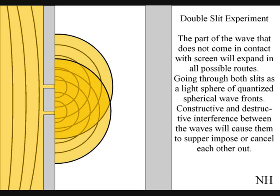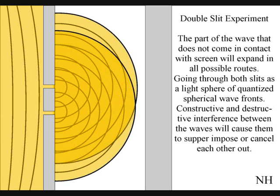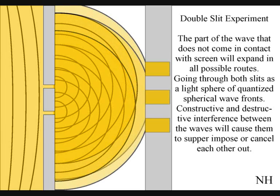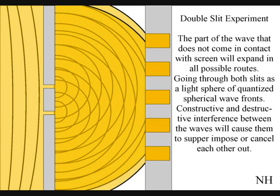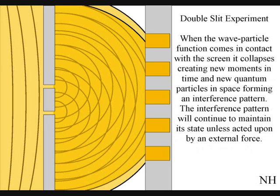Constructive and destructive interference between the waves will cause them to superimpose or cancel each other out. When this wave particle function comes in contact with the screen, it will collapse, creating moments of time and quantum particles in the shape of an interference pattern.